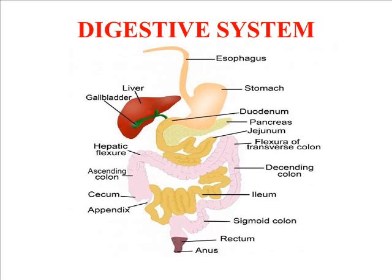teeth, tongue, salivary gland, esophagus, stomach, duodenum, pancreas, jejunum, descending colon, ascending colon, transverse colon, ileum, sigmoid colon, rectum, anus, liver, gallbladder, spleen, and many other things.